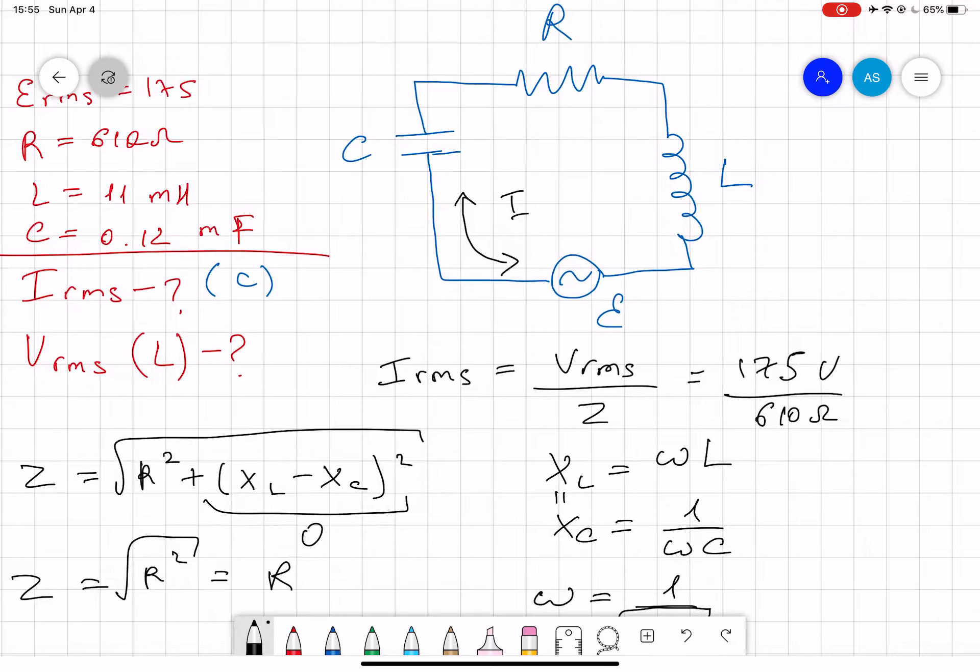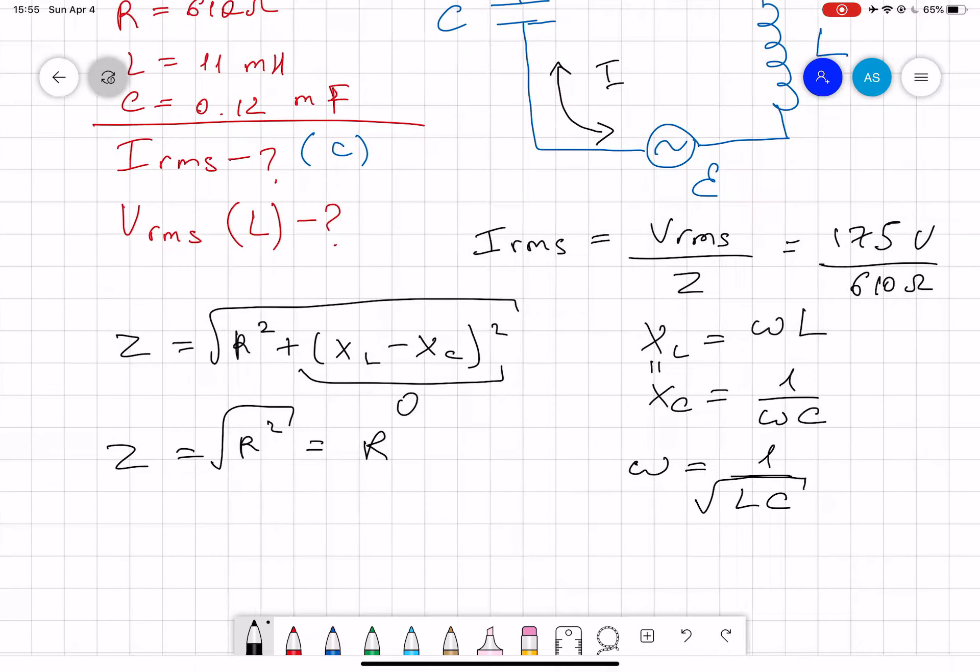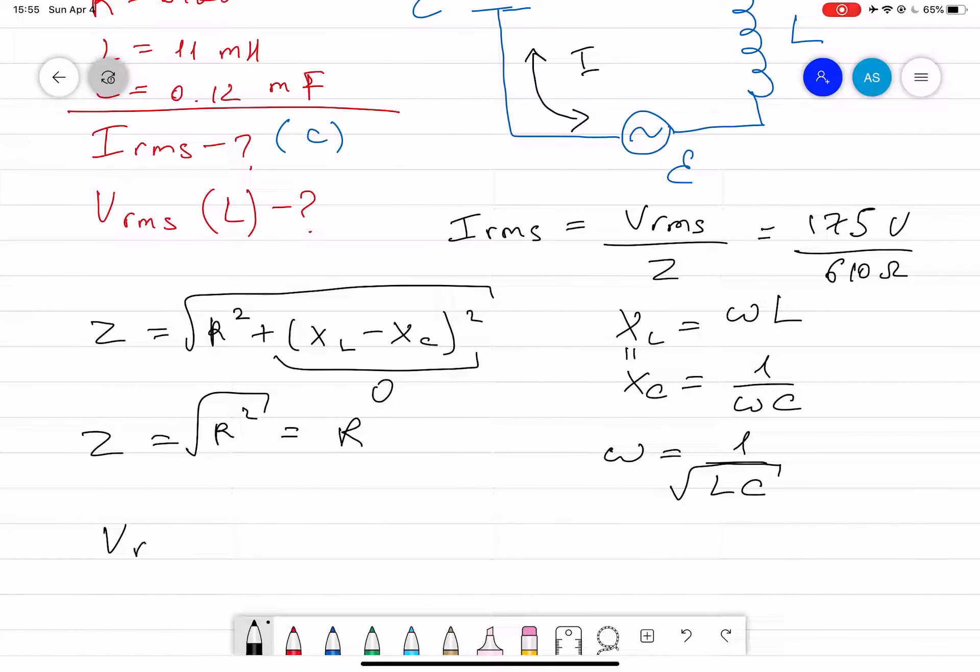If you want to find V_rms across the inductor, V_rms is equal to I_rms multiplied by X_L, which is equal to I_rms times omega L. If you plug in the numbers, you should find the answer.